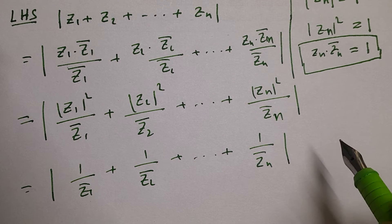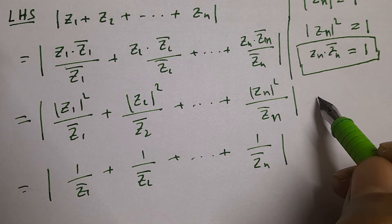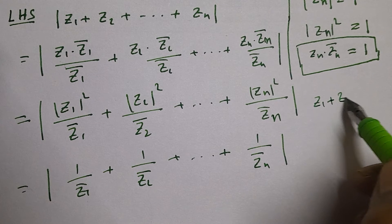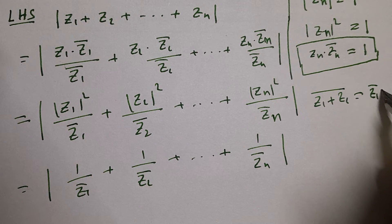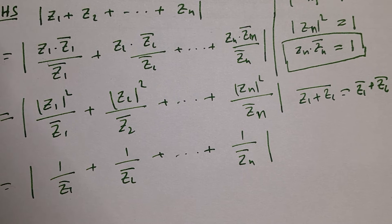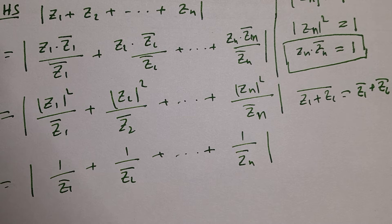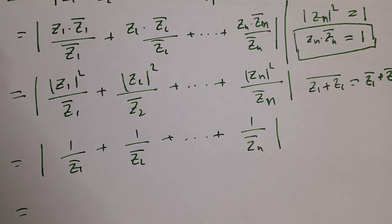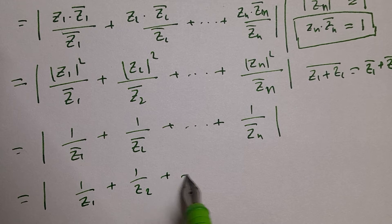Now, using the property that the conjugate of a sum equals the sum of conjugates: z̄₁ + z̄₂ = (z₁ + z₂) bar. So 1/z̄₁ + 1/z̄₂ + ... equals the modulus of 1/z₁ + 1/z₂ + ... + 1/zₙ.